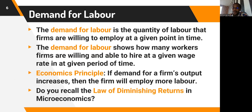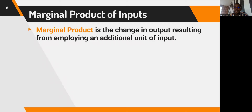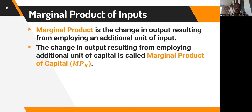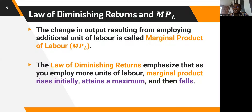Recall the law of diminishing marginal returns from microeconomics: as more units of a variable factor — in this case, labor — are applied to a fixed factor such as land or capital, the additional output increases, reaches a maximum, and then falls. The firm's production is associated with a concept called marginal product. Marginal product is the change in output resulting from employing an additional unit of input — marginal product of capital for capital, and marginal product of labor for labor.